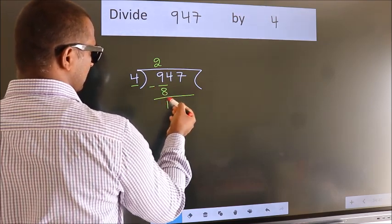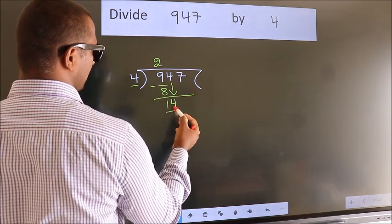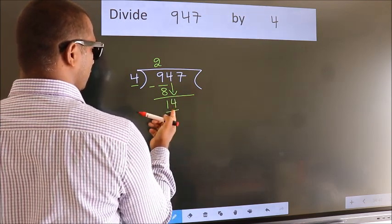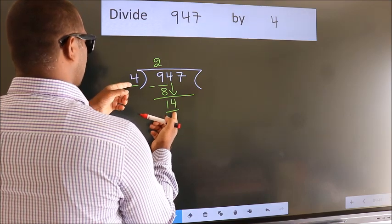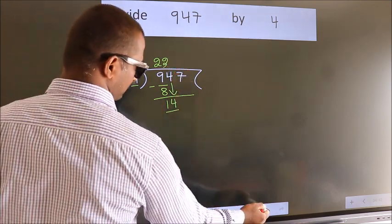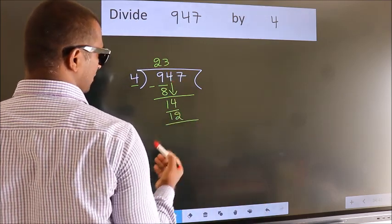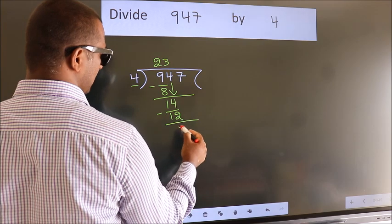After this, bring down the beside number. So 4 down. So 14. A number close to 14 in 4 table is 4 threes, 12. Now we subtract. We get 2.